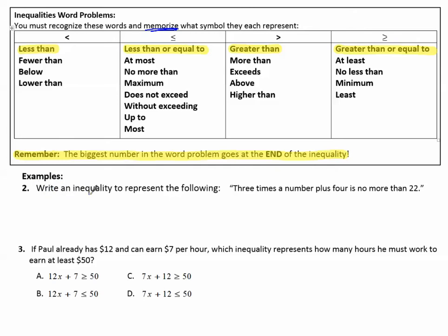Number two, write an inequality to represent the following. Three times a number plus four is no more than 22. So three times is represented by multiply. A number could be anything, so we put a variable. Plus four. And then the inequality symbol is no more than. No more than is less than or equal to. And then the number 22. Three x plus four is less than or equal to 22. So it's important to be able to translate our words into symbols.